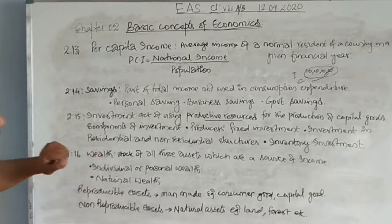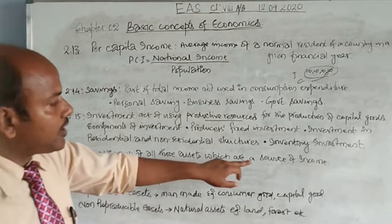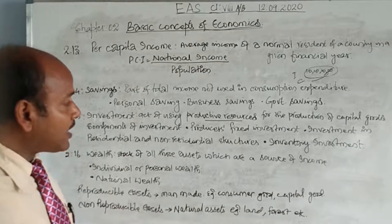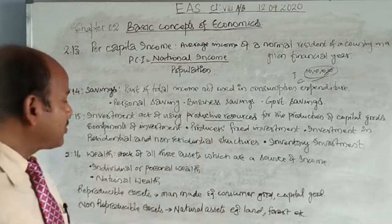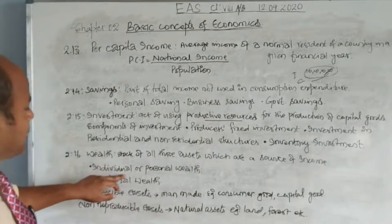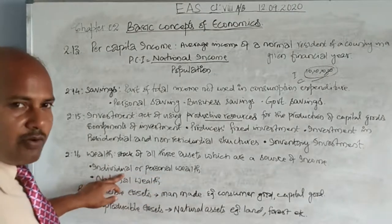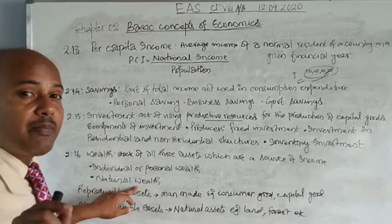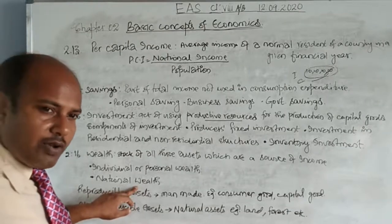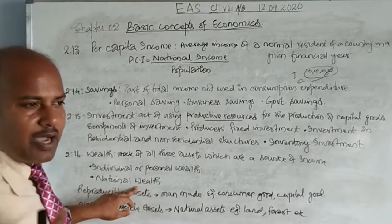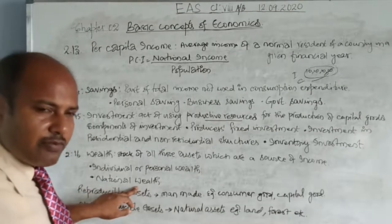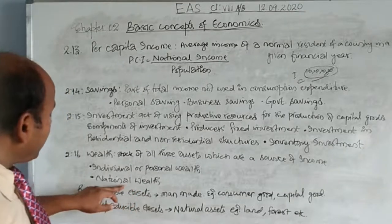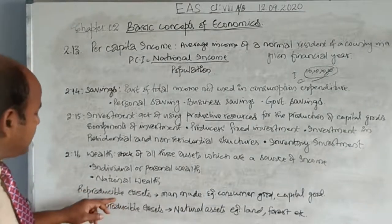The next important concept is wealth. Wealth is the stock of all those assets which are a source of income — assets which can bring income to us. Wealth can be individual or personal. Your wealth and my wealth are personal wealth. National wealth is the sum of all the people's wealth in the country — when we add all the individual wealth of all people in a country in a given time period, what we get is national wealth.